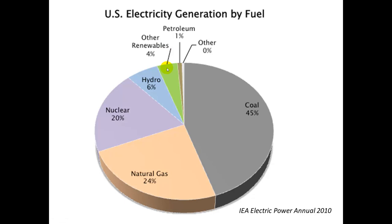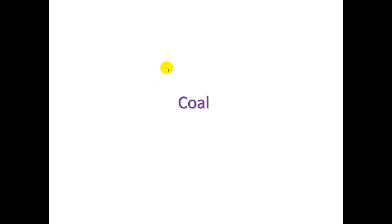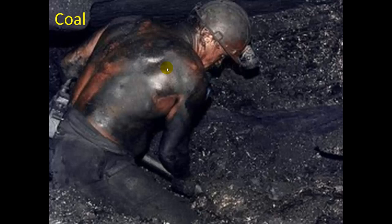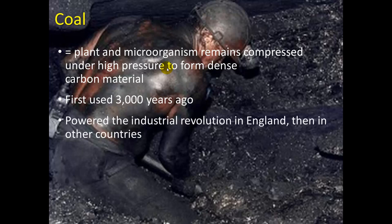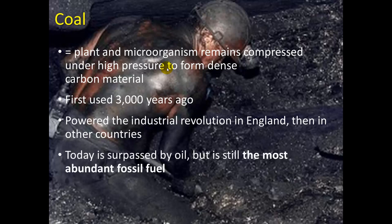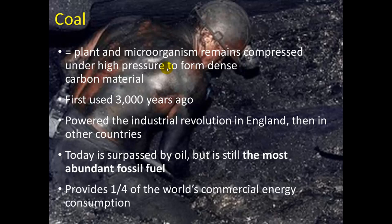Let's take a closer look at coal. Coal is the plant and microorganism remains compressed under high pressure to form dense carbon material. It was first used 3,000 years ago and powered the Industrial Revolution in England and other countries including the US. Today it is surpassed by oil, but it's still the most abundant fossil fuel — we have several hundred to over a thousand years worth of reserves in the earth, and it provides one-fourth of the world's commercial energy consumption.